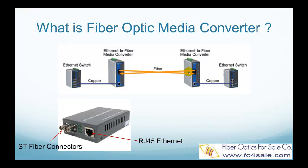A fiber optic media converter has two interfaces. One interface is a local electronic interface, which may be an RJ45 Ethernet or RS-232 serial data interface. The other interface is usually a duplex fiber interface with ST, SC, or LC connectors.